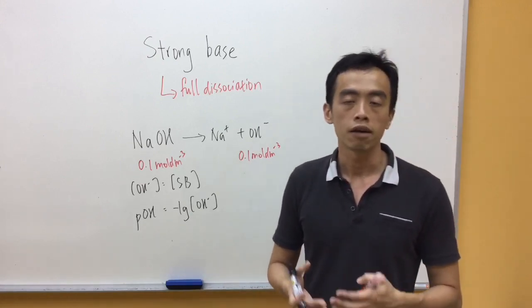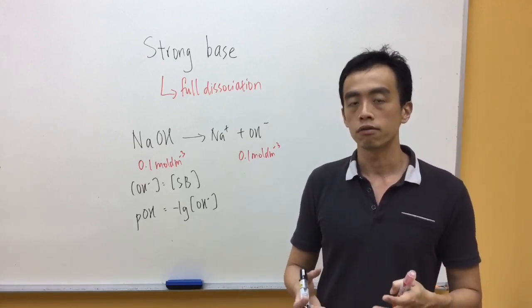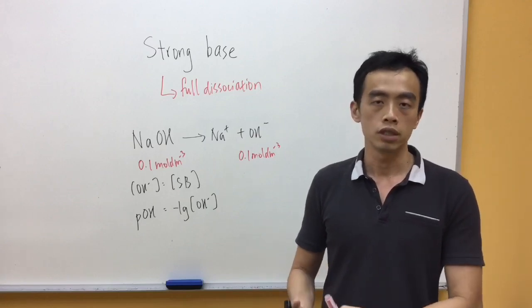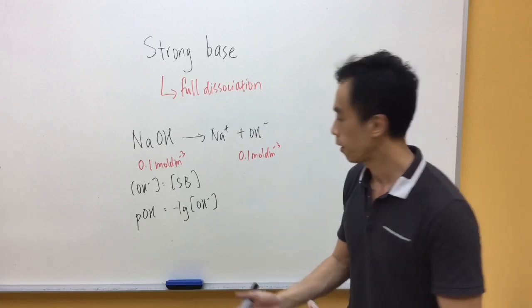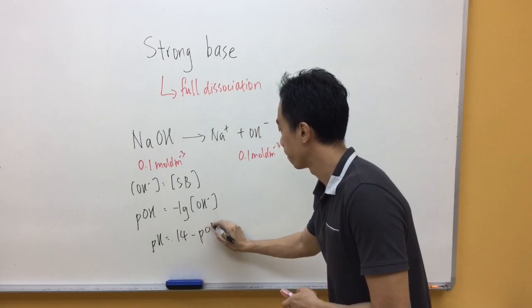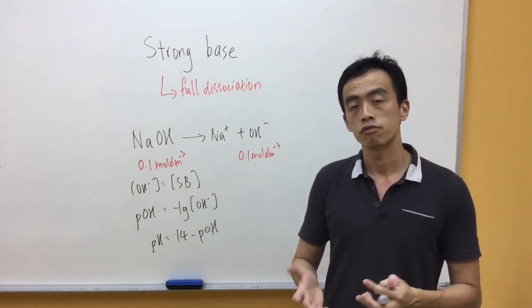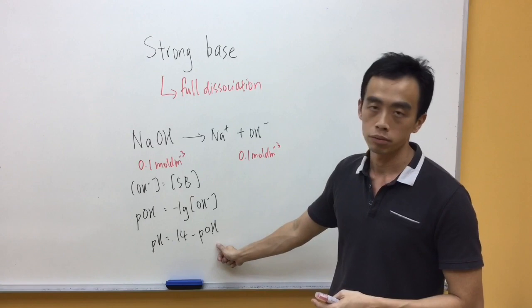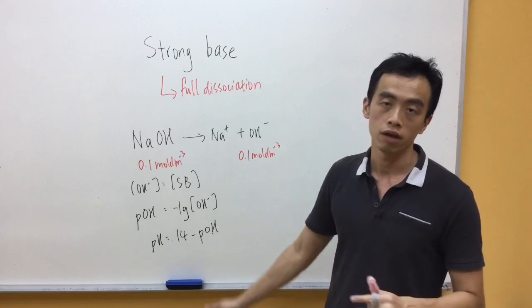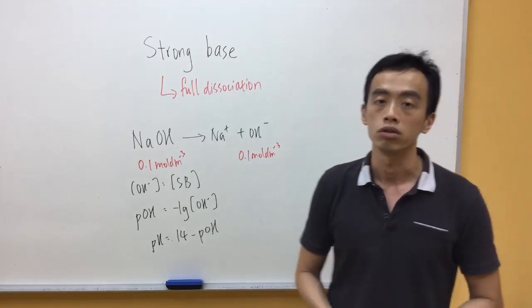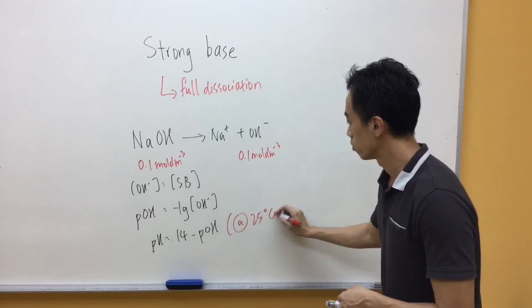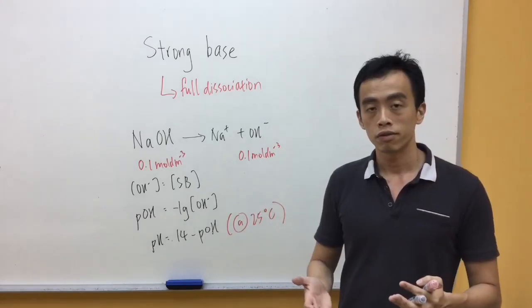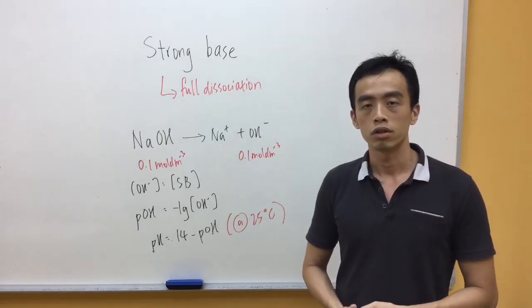Now when we have pOH, we can find pH by using this formula: pH equals 14 minus pOH. Now what we need to keep in mind is this particular formula only works at 25 degrees Celsius or under standard conditions. So this is how we find the pH of a solution of a strong base.